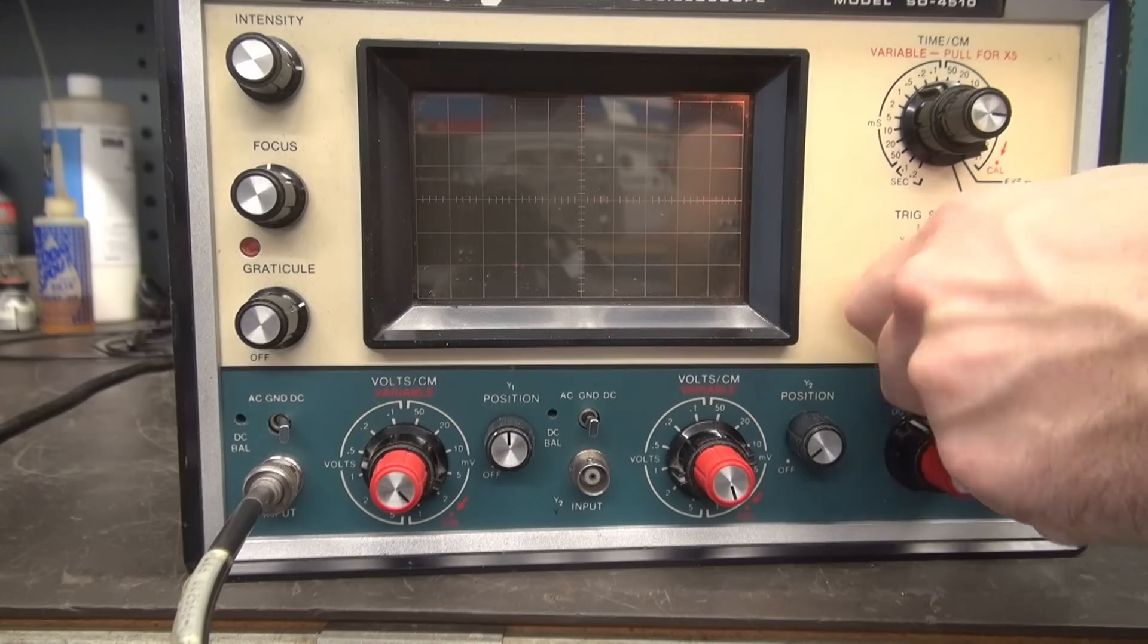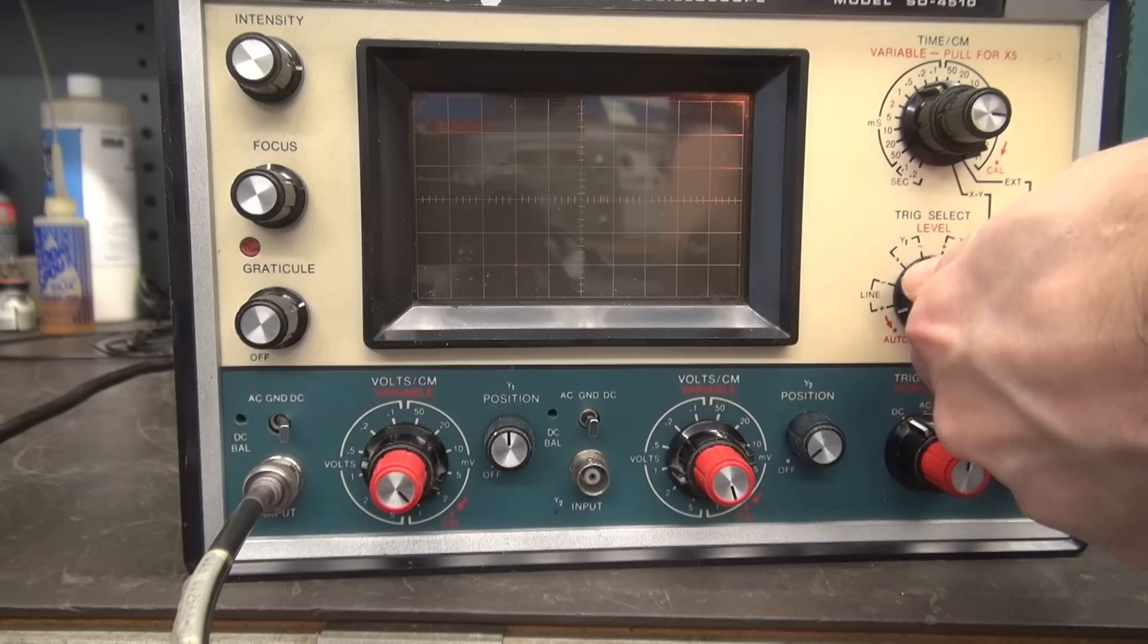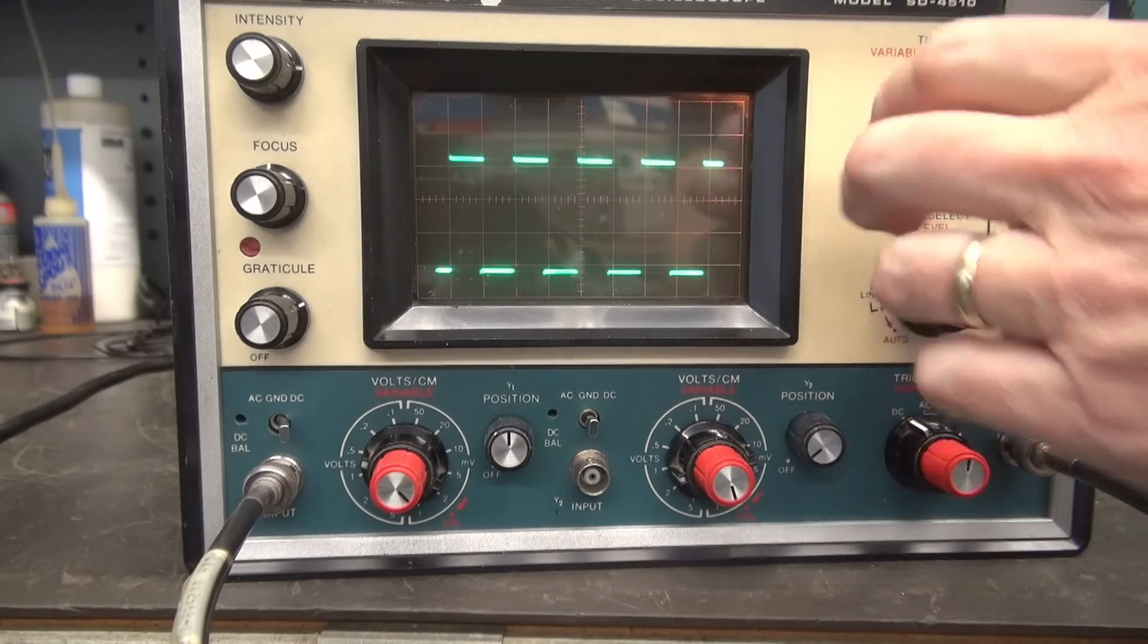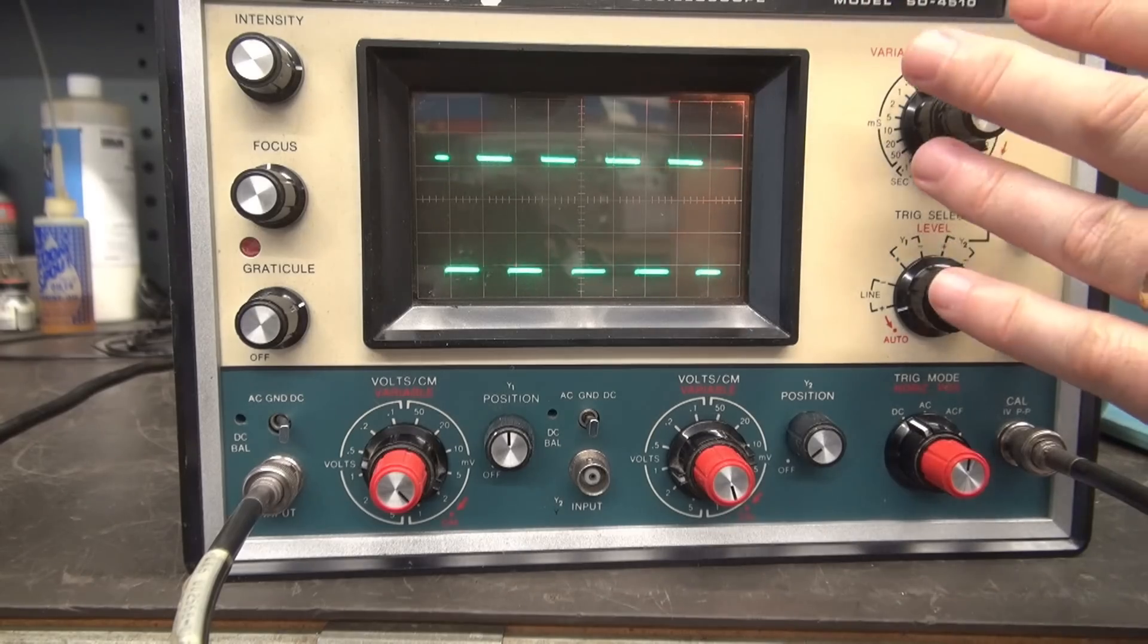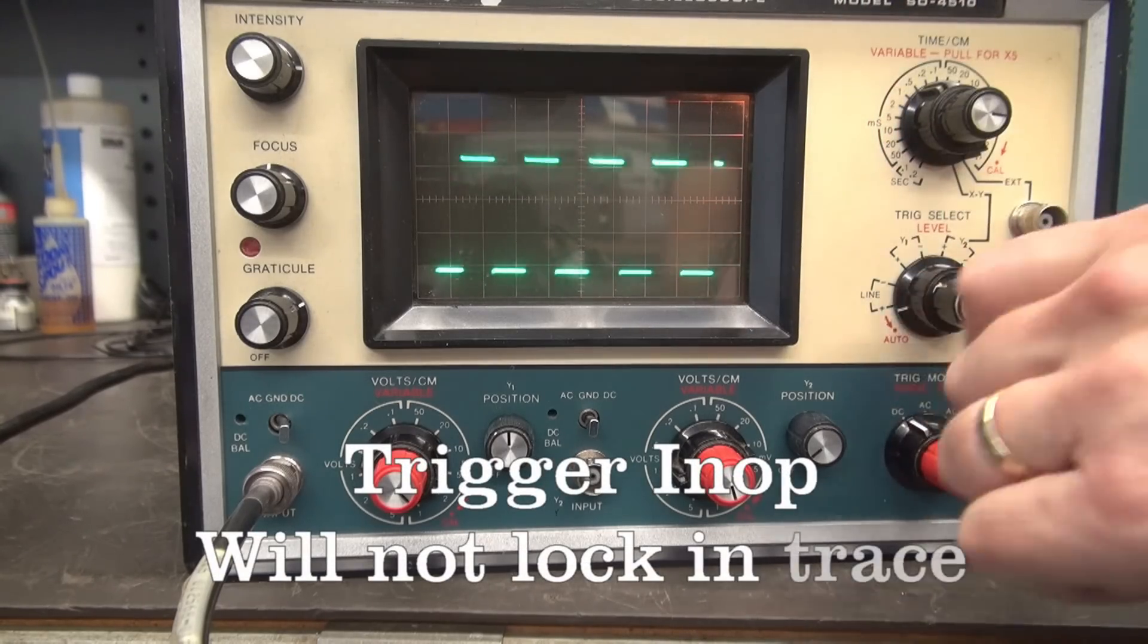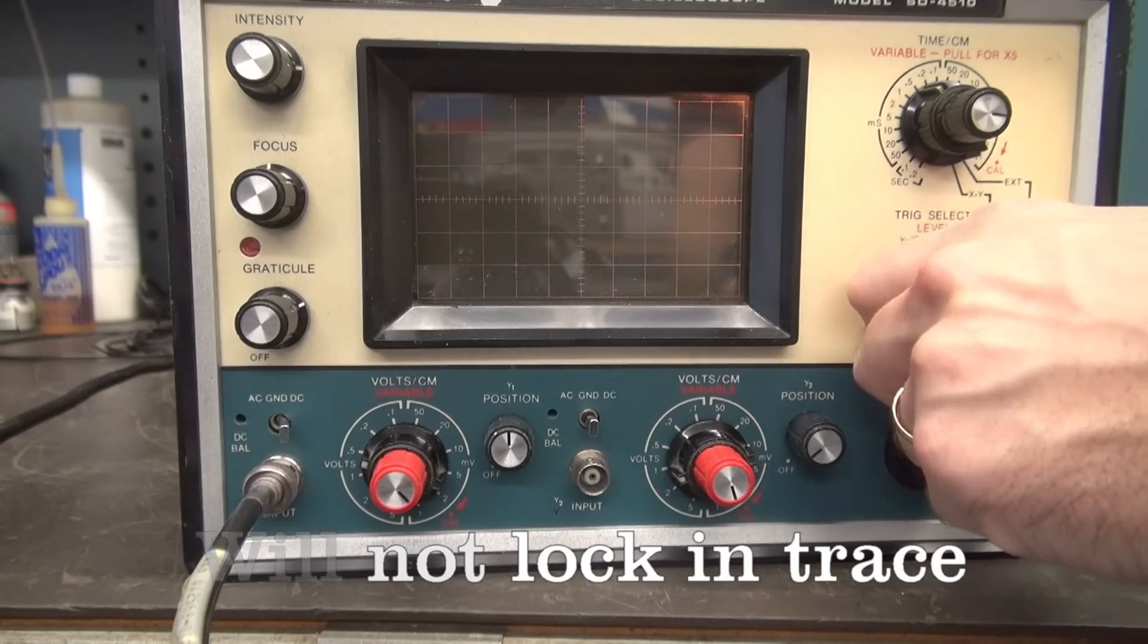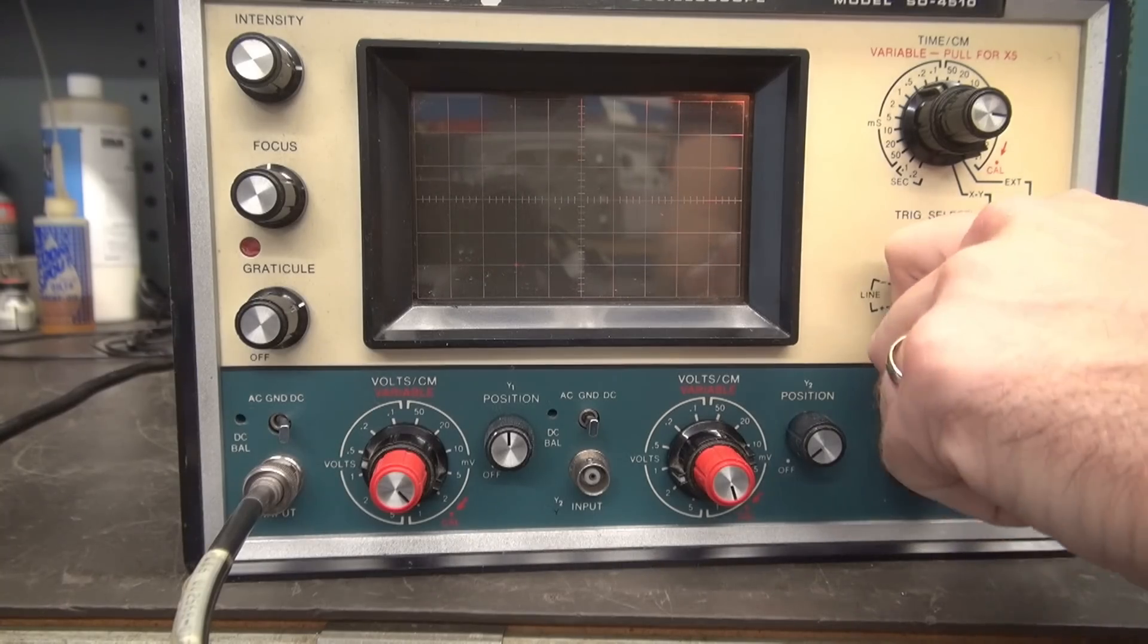And it doesn't work. You notice when I flip, you'll see little hints that it's trying to do something, but in no position will the triggering work. If you go back to auto, it just free runs. That would be absolutely worthless if you're trying to use this scope to measure something. So yes, the triggering is inop. Does not work.